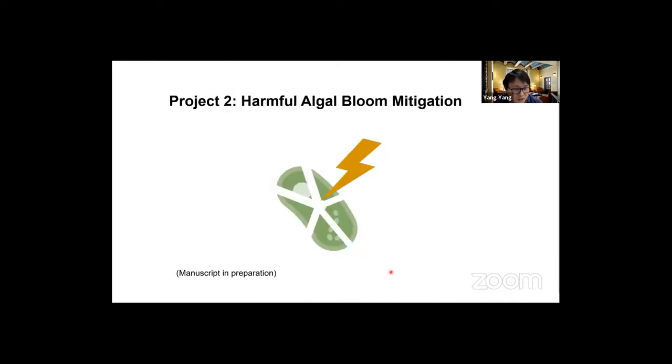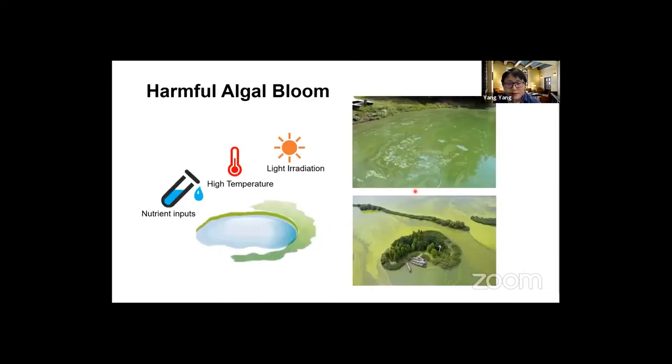This is one third of my talk. The second project in my lab, we are working on using electrochemical oxidation method to mitigate harmful algal blooms. You probably already witnessed a harmful algal bloom. It is definitely not pleasant. Fortunately, it only happens in summer. In summer with enough nutrient inputs, the input usually comes from agricultural sources, non-point sources, and runoff. At an appropriate temperature, usually in summer with abundant light irradiation, you can have algal bloom.